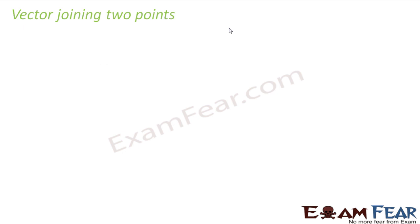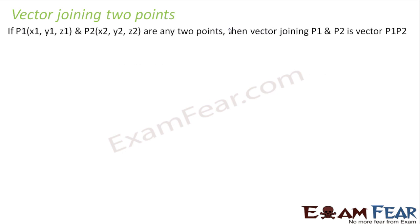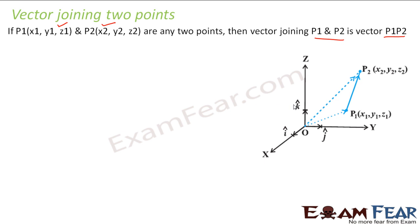Now we will discuss vector joining two points. If there are two points — let's say p1(x1, y1, z1) and p2(x2, y2, z2) — the vector joining them is called p1p2. Please note, it is written as p1p2.